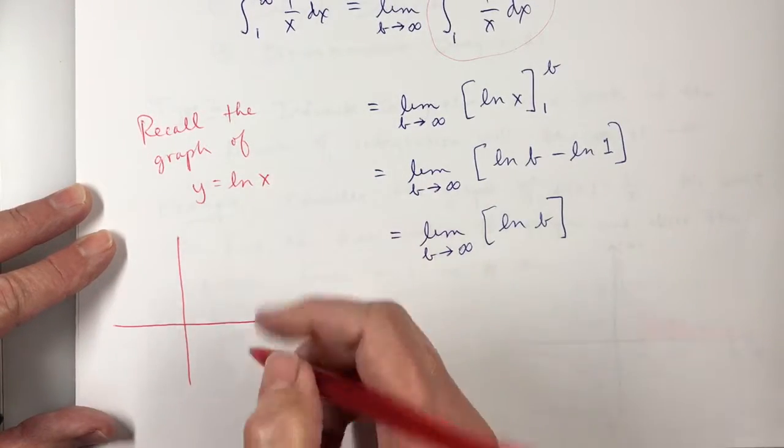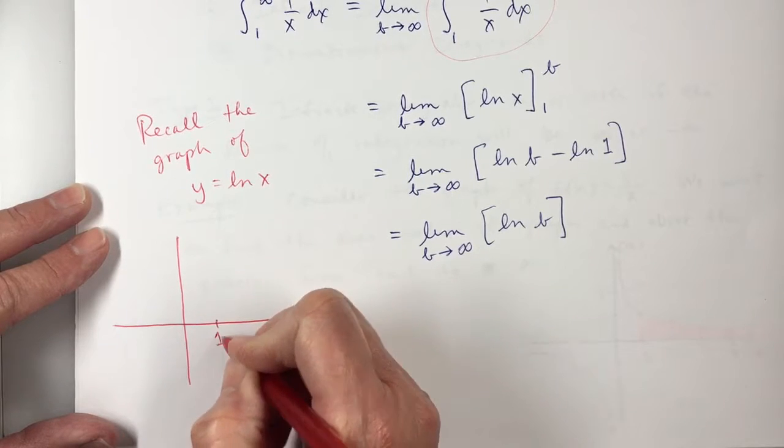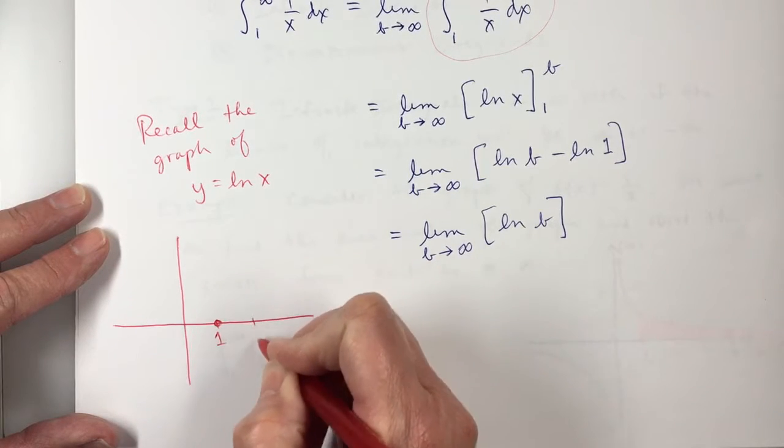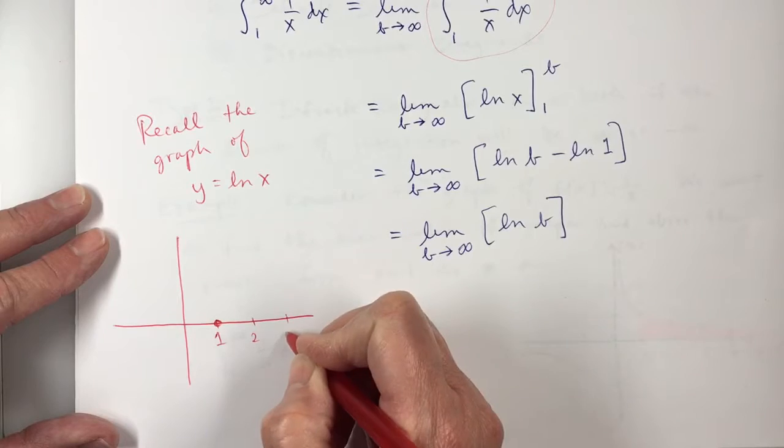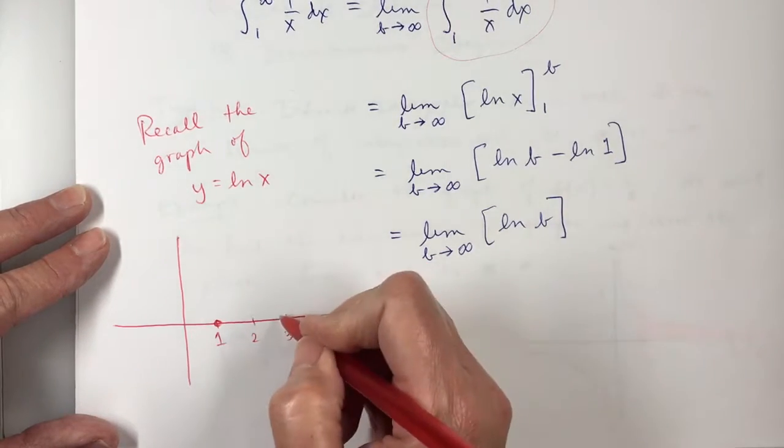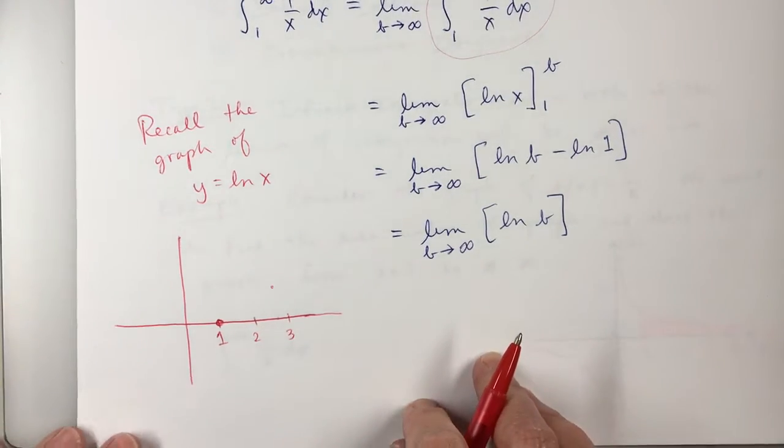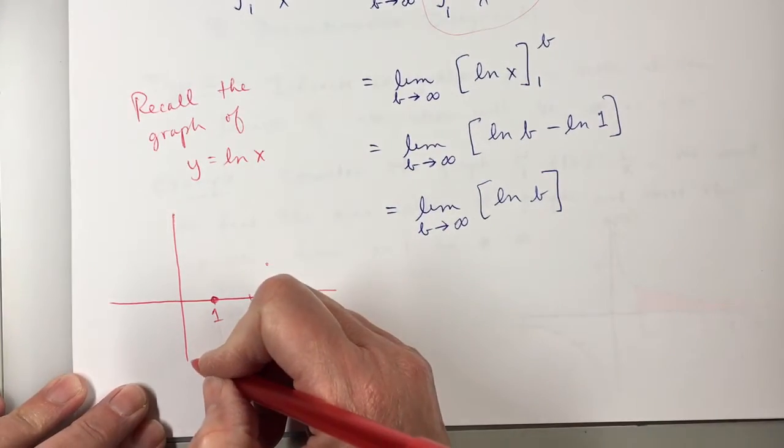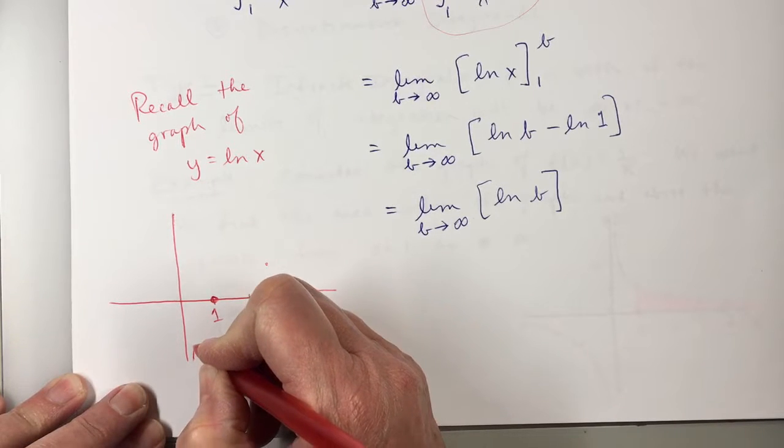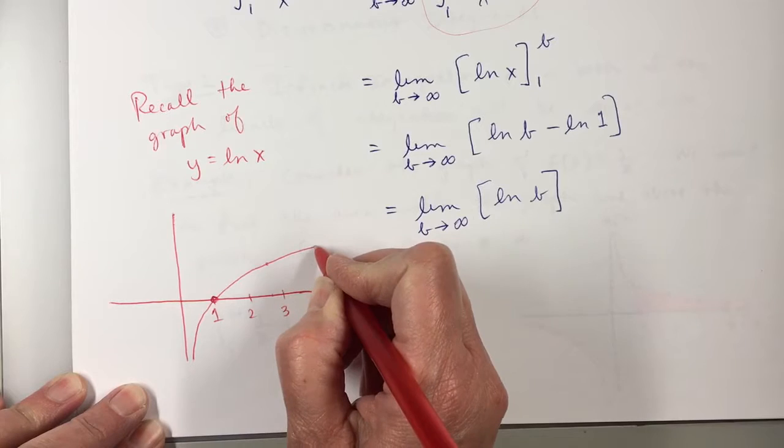The natural log of x, let's see. If I plug in 1, I get 0. And, in fact, if I plug in E, I get 1. Not that you necessarily need all that, but you need to know what the shape of this graph is. There is a vertical asymptote, which is the y-axis, and then it does this.